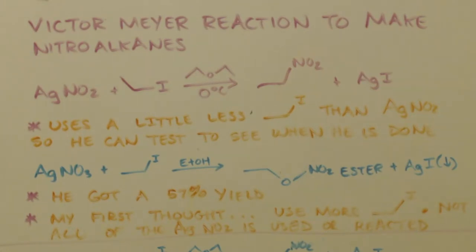I could see why he did it. It was so that he could know when he was done. Once he used up all the silver nitrite, if there's still excess ethyl iodide in there, he'll always test saying there's more in there. So I could see why he did it. But my first thought was add more ethyl iodide because you're not using all your silver nitrite.